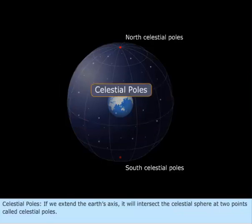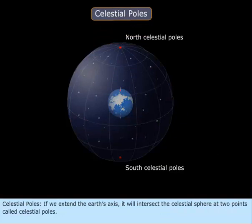Celestial Poles. If we extend the Earth's axis, it will intersect the celestial sphere at two points called celestial poles.